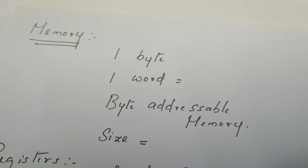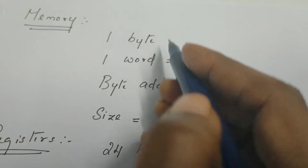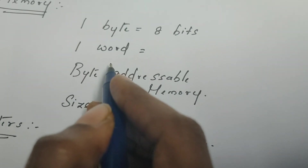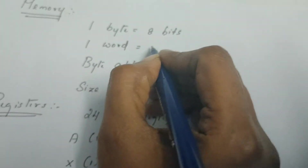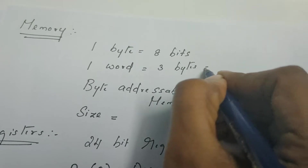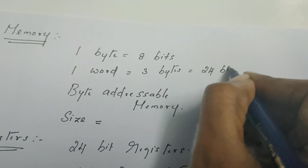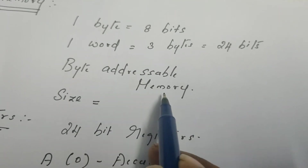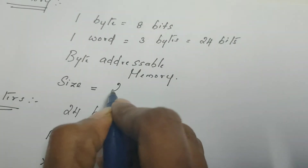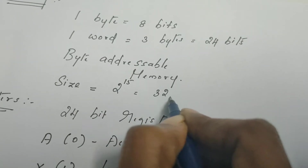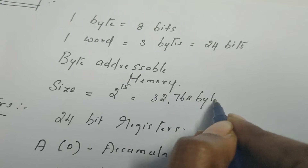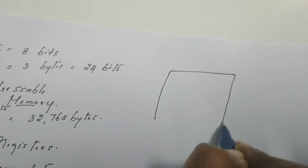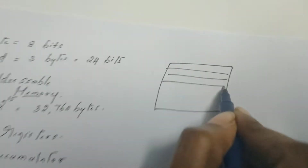Now let us understand what is memory in SIC architecture. One byte is equal to 8 bits. One word means 3 bytes, which is equal to 24 bits. Every byte is given an address, which is why it is known as byte addressable memory. The size of the memory in the SIC standard model is 2 to the power of 15, which is equal to 32,768 bytes.